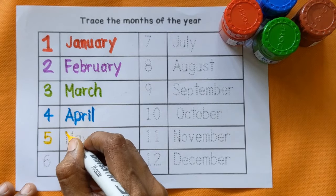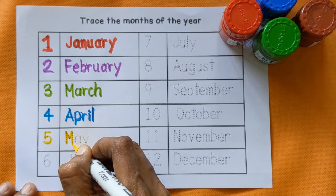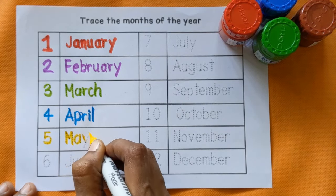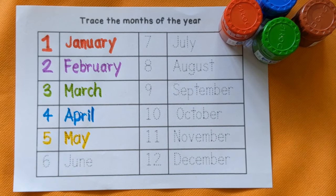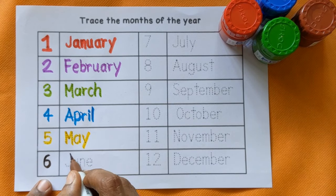Next is number 5. M, A, Y — May, yellow color.